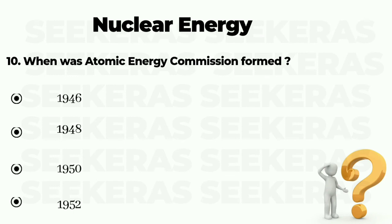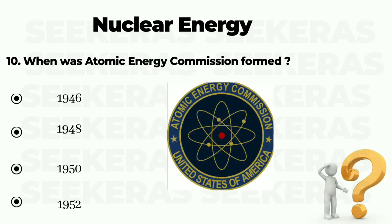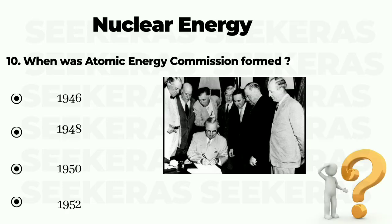Question number 10. When was the atomic energy commission formed? Option A 1946, option B 1948, option C 1950, and option D 1952. The correct answer is option B, 1948.